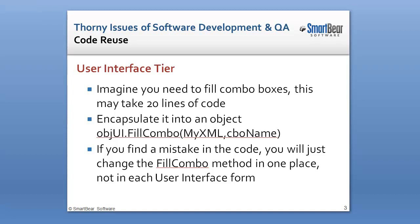A better way to do that, rather than writing that logic three times for each combo box, is to simply create a user interface tier with a method called fill combo box. Rather than having to read the database, simply pass in the XML that you've already queried from the database, and then pass in a combo box name. It will then take all of the hard work of parsing the items in the XML, formatting them into the format needed for the combo box, and returning that combo box to display in your user interface.